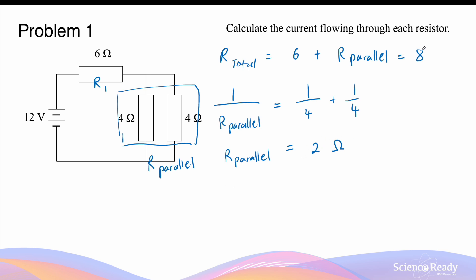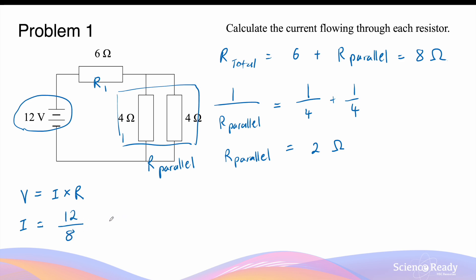Substituting 2 ohms into the first equation gives a total resistance of 8 ohms. With the total resistance and the battery voltage, we apply Ohm's law — V equals I times R — to calculate the total current flowing through the circuit. That gives us 12 volts divided by 8 ohms, which equals 1.5 amps.